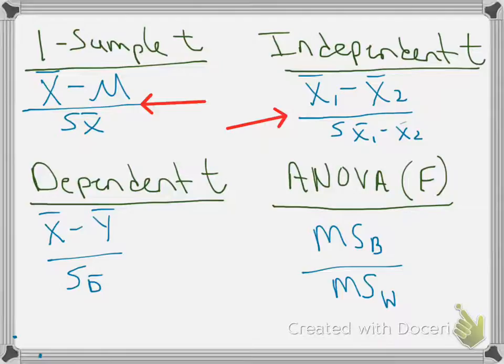So again, the formula is exactly the same. Is the difference between my observed sample means big or small compared to the difference I would expect to get just due to random sampling?